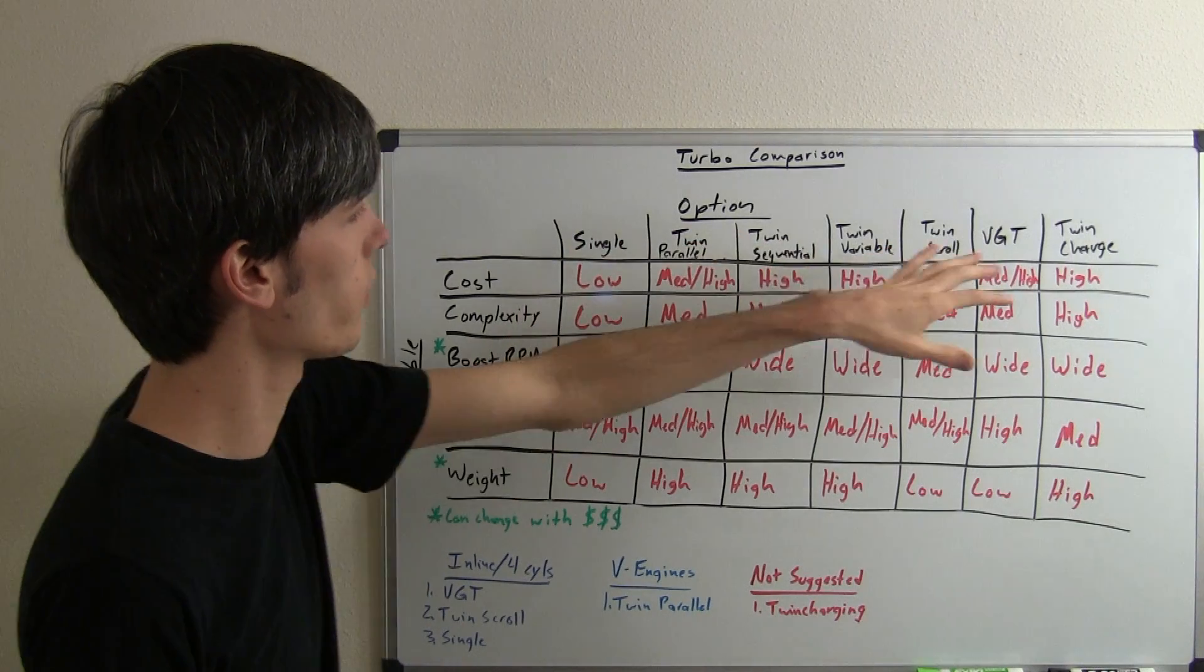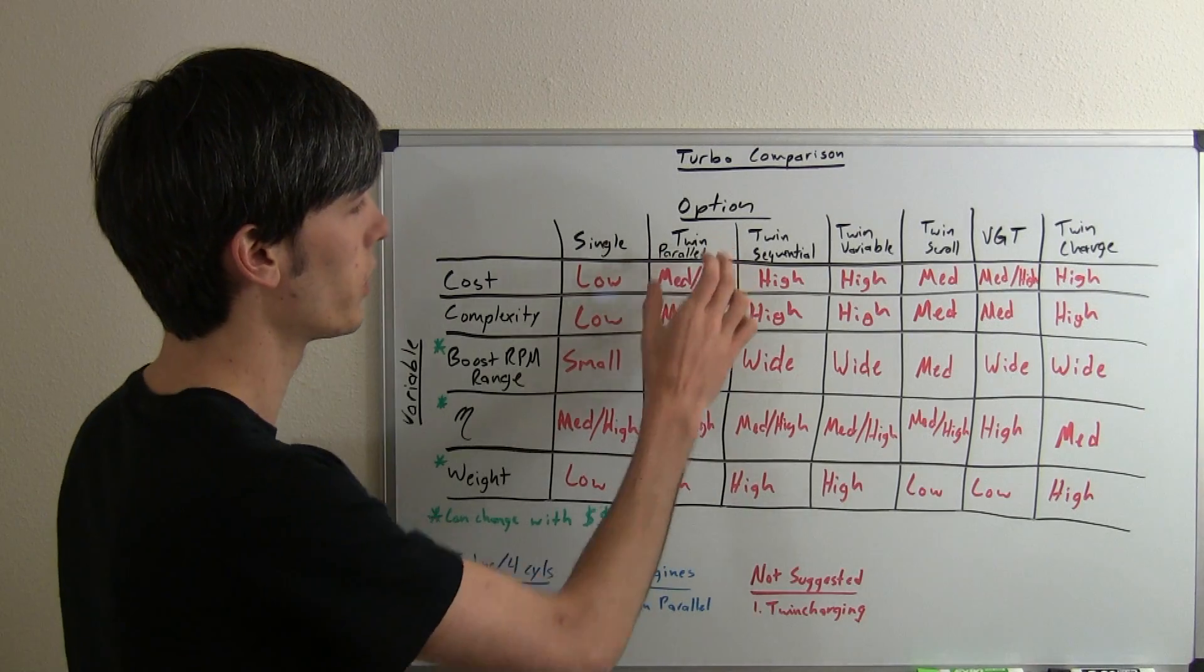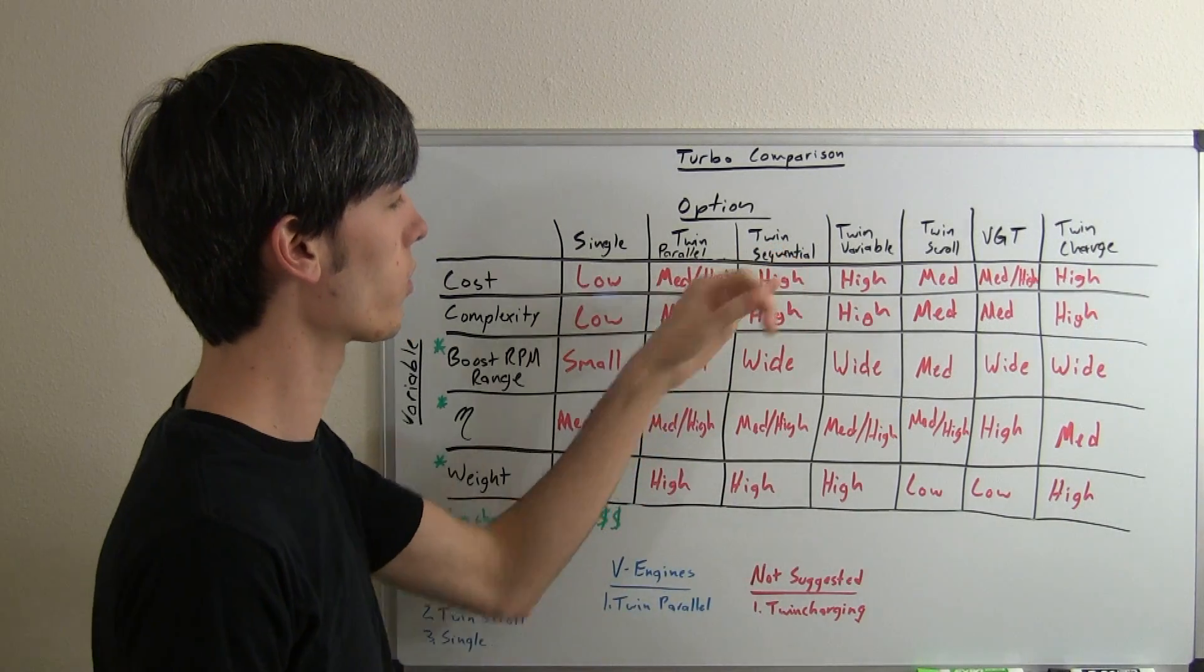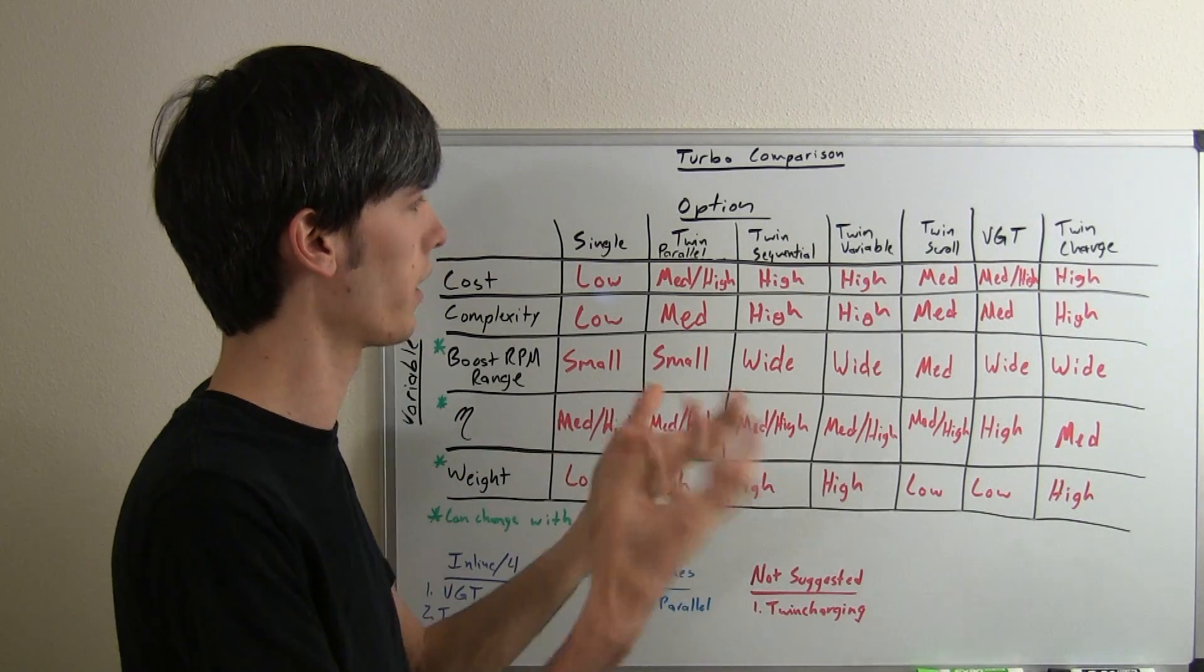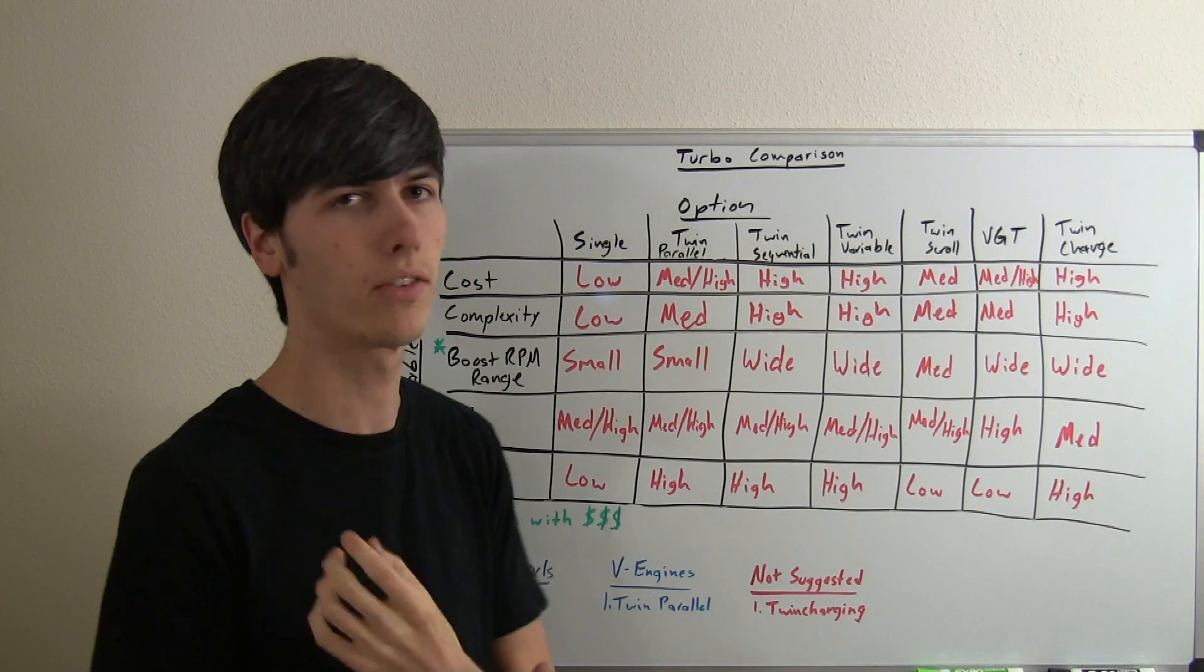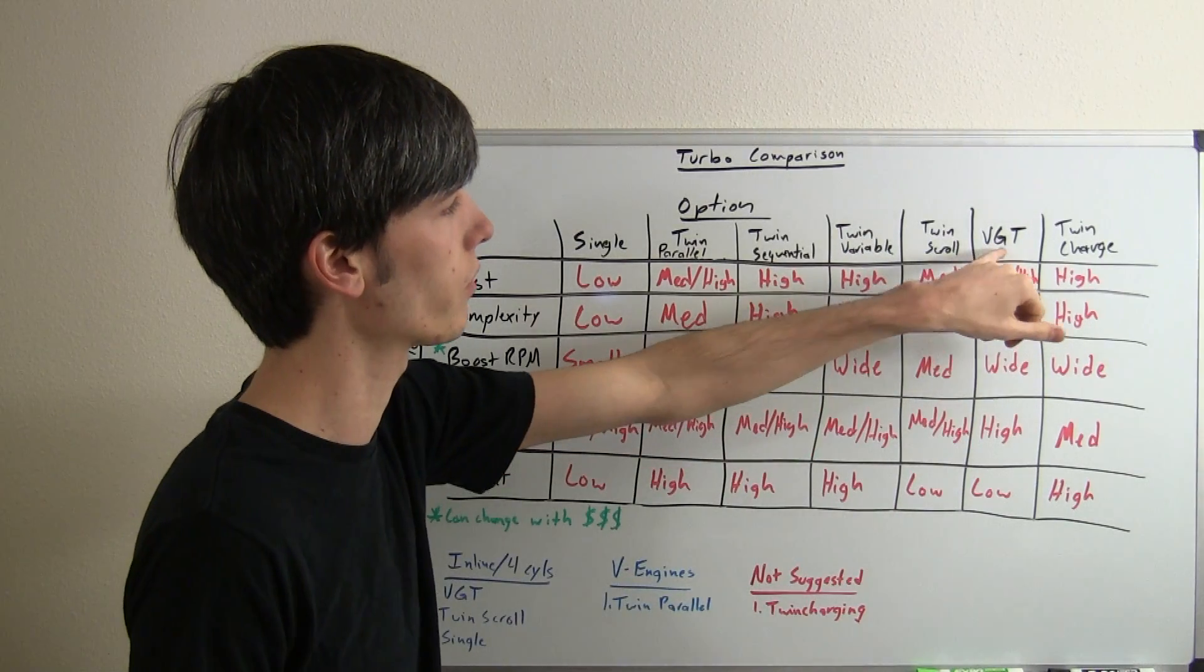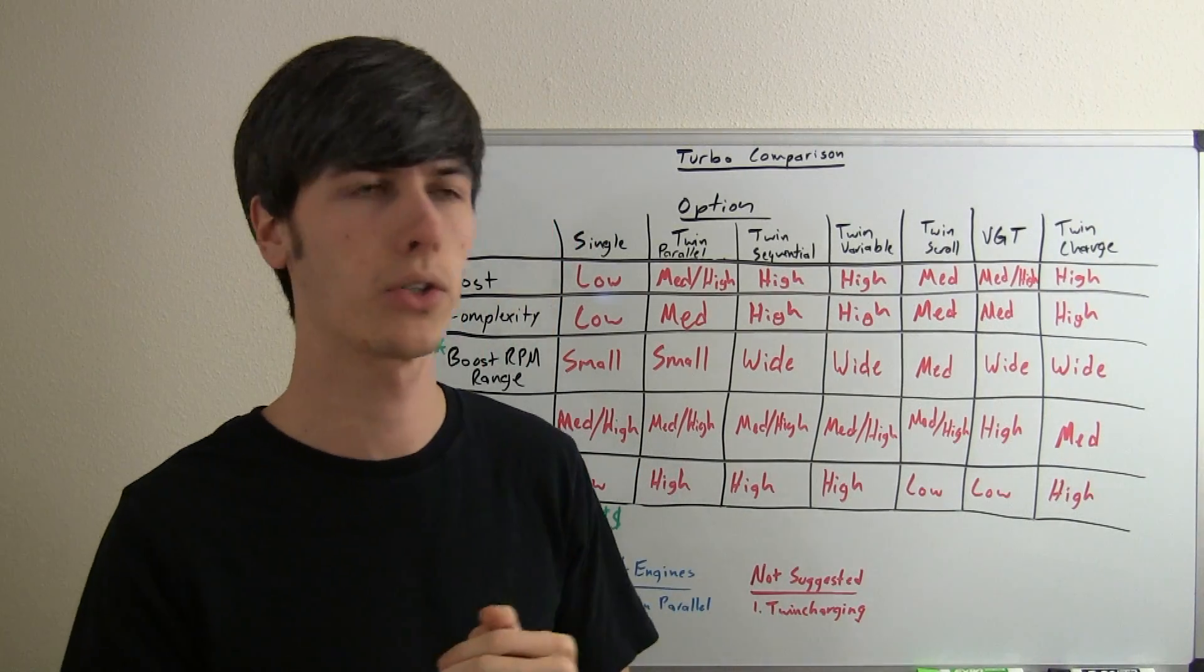So the seven different turbocharger systems I'm going to be comparing: single, twin parallel—so this is when you've got like a V-shaped engine and you've got two turbochargers of the same size, each for each cylinder bank. Twin sequential, this is when you have one activate and then both activate at a later RPM. Twin variable, so this is when you have different size turbochargers—you'll have one for low RPM and a larger one for high RPM. Twin scroll, another type of turbocharger, variable geometry turbocharger, and then twin charge when you have a turbocharger and a supercharger together.